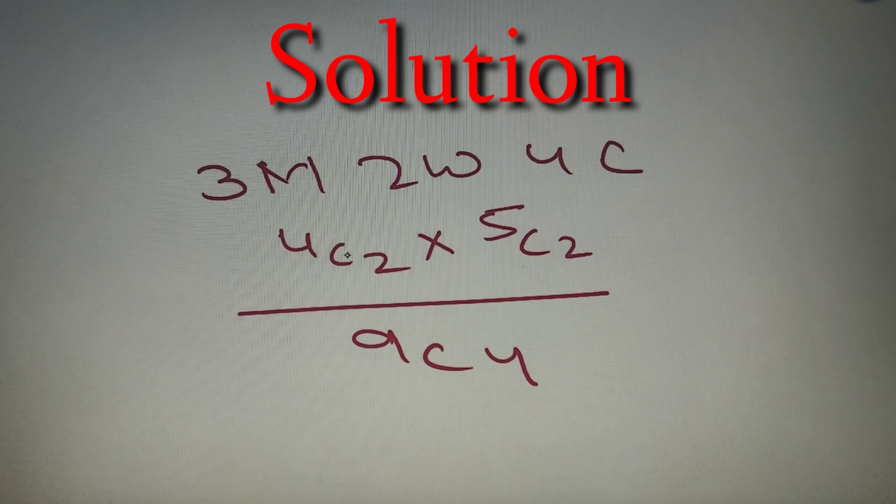So our final probability is equal to 4C2 × 5C2 / 9C4. Now we just have to put the values and we'll get our final numerical answer. Now we know that 4C2 is equal to 6, 5C2 is equal to 10, and 9C4 is equal to 126.